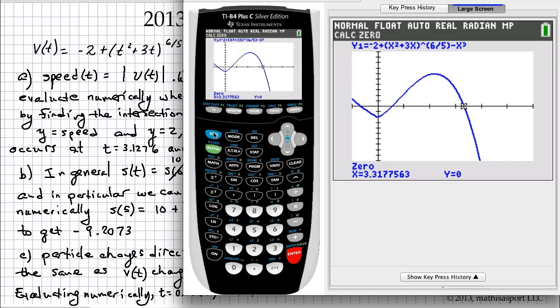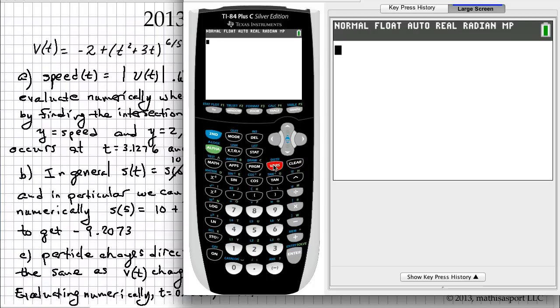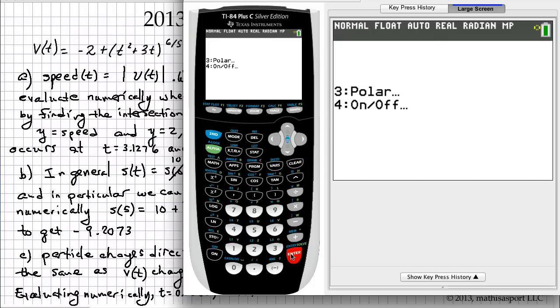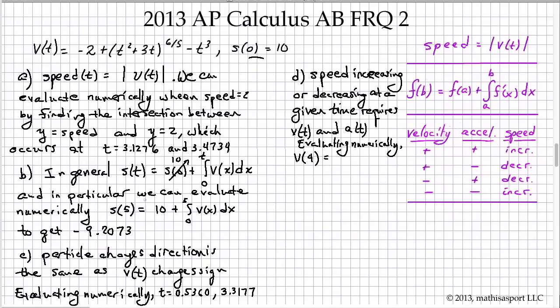Now let's use our calculator. Velocity as a function of time is the Y1 function. So let's clear this out. We just want to know what Y1 is when we plug in T equals 4. Negative 11.4757.